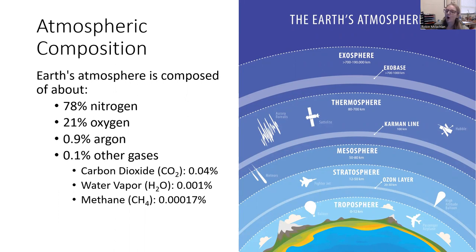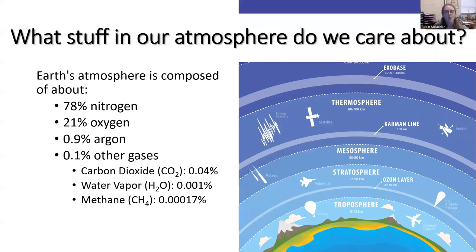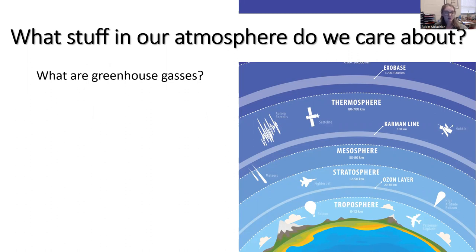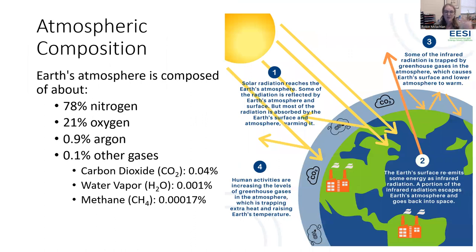We don't care about all of these things for climate — we only care about a few of them. What stuff in our atmosphere are we going to talk about? We're going to talk about what we call pollutants. For climate, the pollutants are greenhouse gases, ozone depleting particles, and aerosols. Greenhouse gases is probably the thing you're most familiar with. Those are that 0.1 percent of other gases — a lot of those are greenhouse gases in our atmosphere.